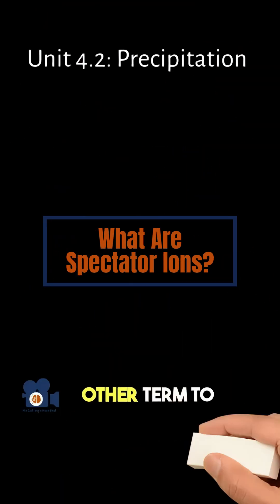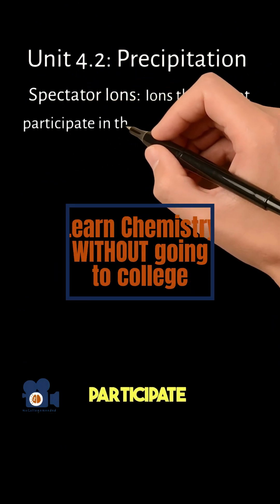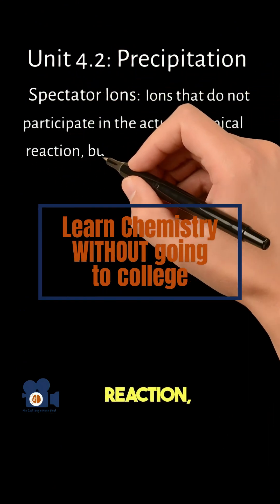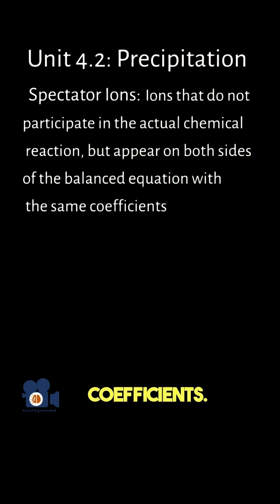There is one other term to know, which is spectator ions. They are ions that do not participate in the actual chemical reaction but appear on both sides of the balanced equation with the same coefficients. For example,